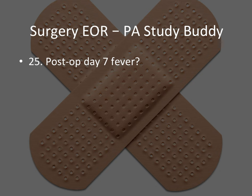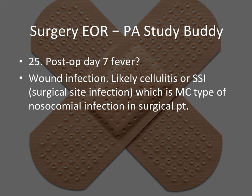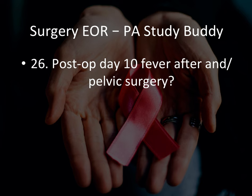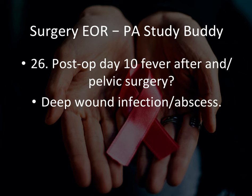Post-op day seven fever would mean a wound infection — likely cellulitis or a surgical site infection, which is the most common type of nosocomial infection in surgical patients. Days one to three: pneumonia; day five: DVT; day seven: wound infection. Post-op day ten fever after abdominal or pelvic surgery means deep wound infection or abscess. On day ten, think deep wound infection — they can list pneumonia, DVT, surgical site infection, or deep wound infection, and the answer is deep wound infection or abscess on day ten.